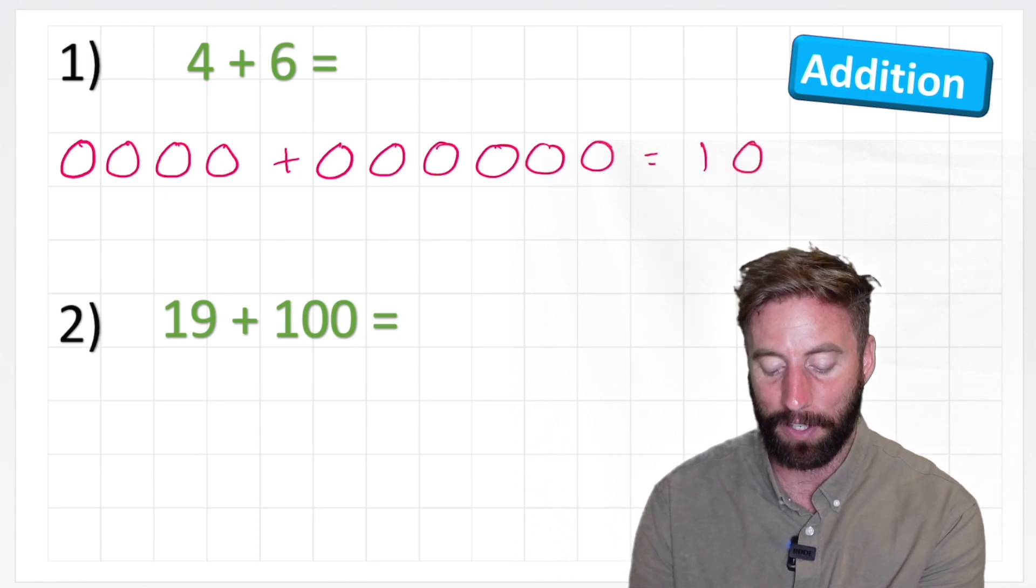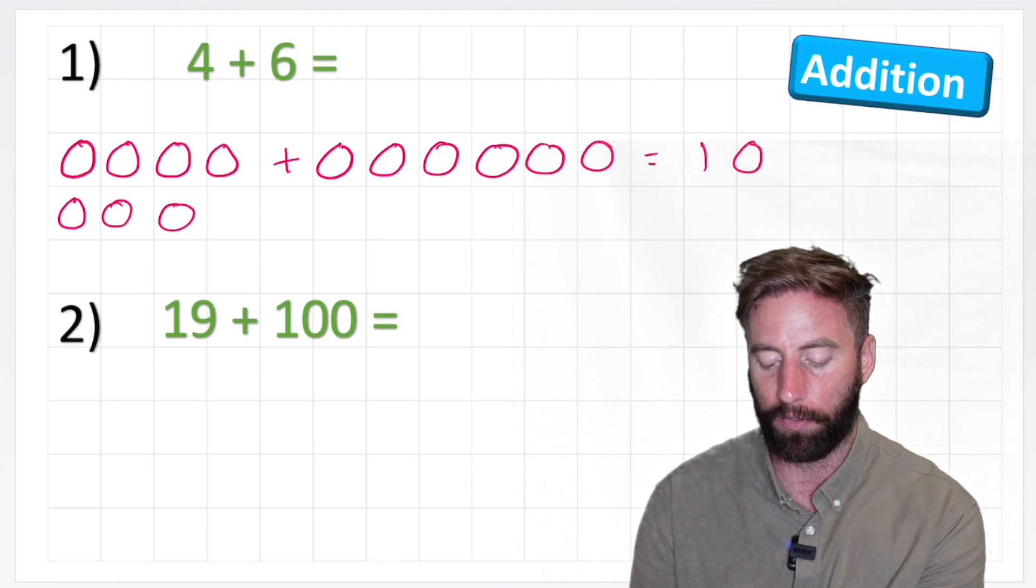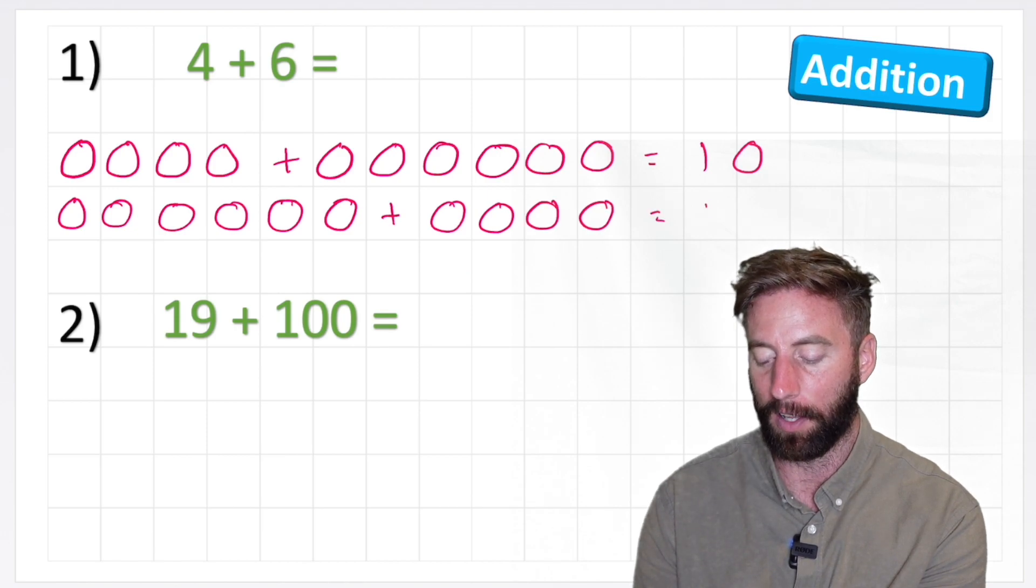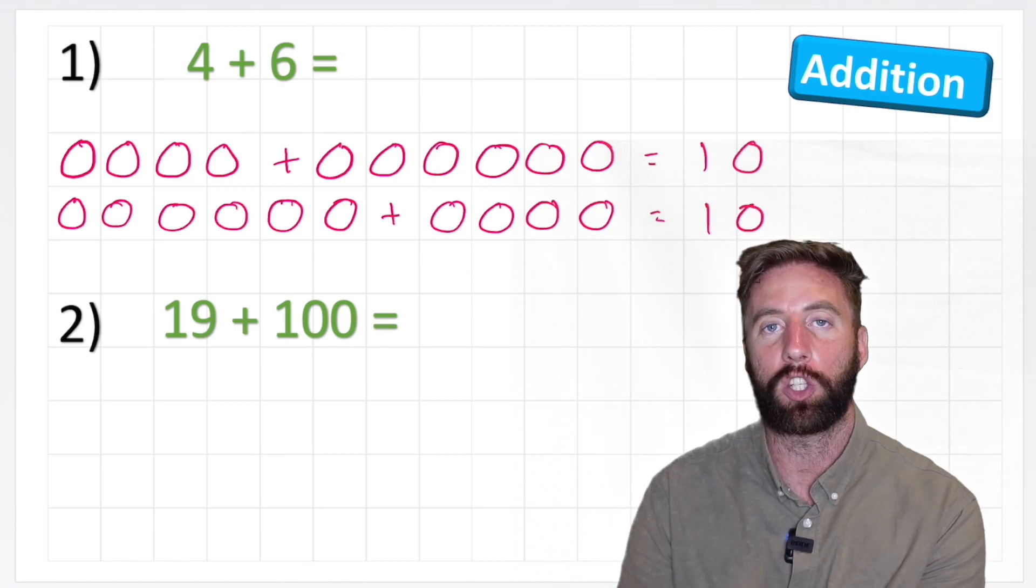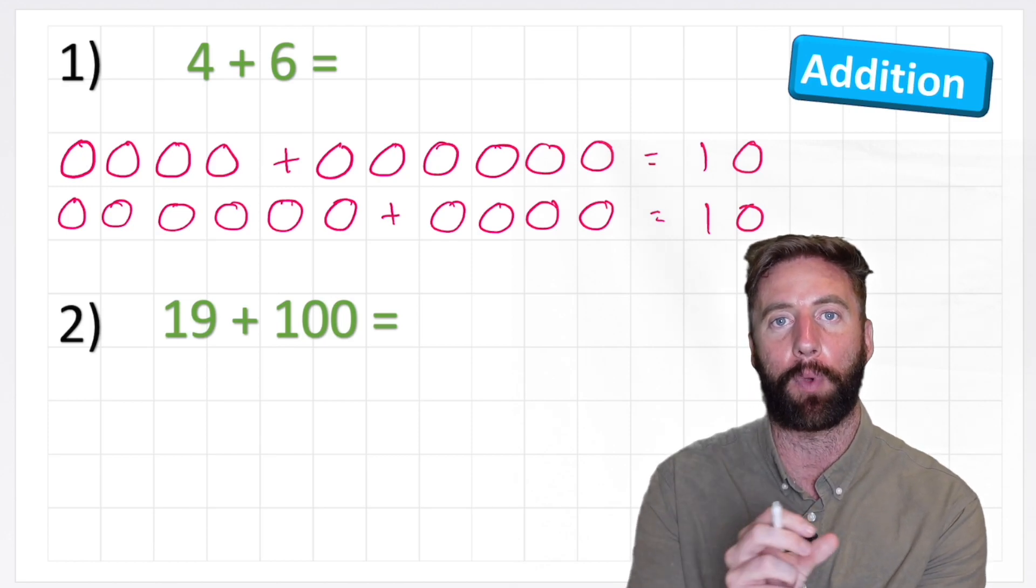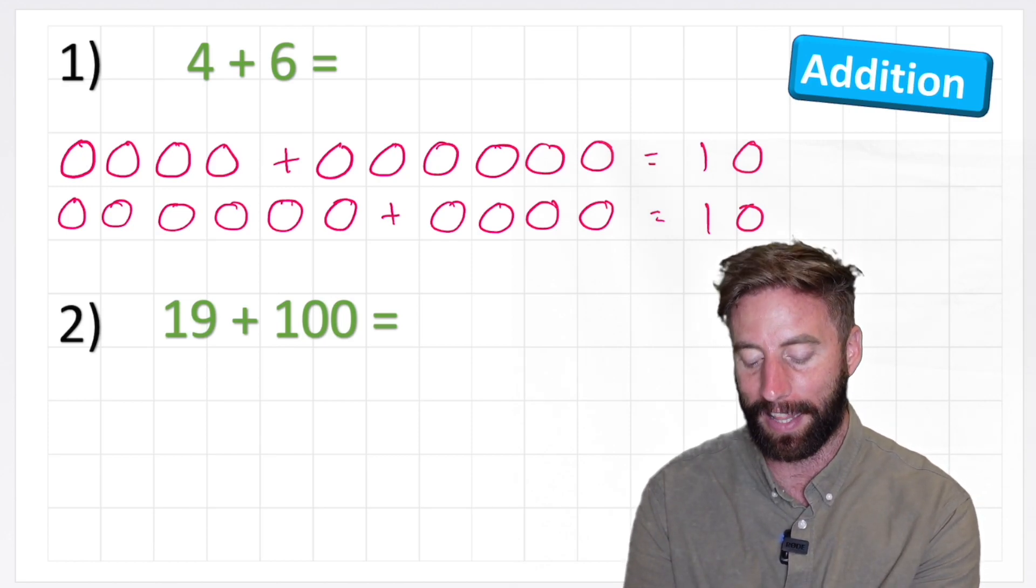And it's exactly the same as if I have one, two, three, four, five, six at the start, and one, two, three, four. I still get a total of 10. So addition questions are commutative. It doesn't matter which way around we put our question, we're still going to get the same answer.